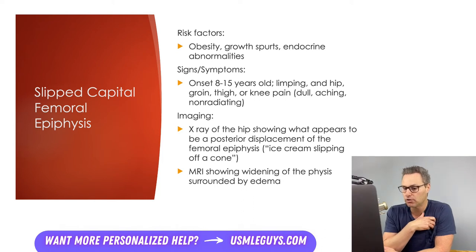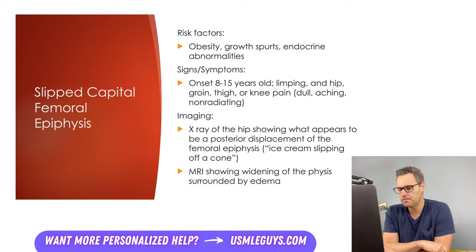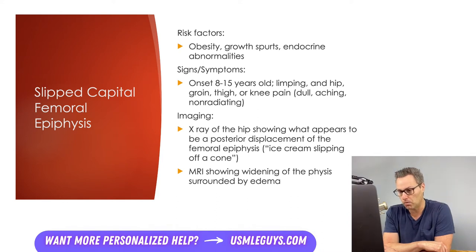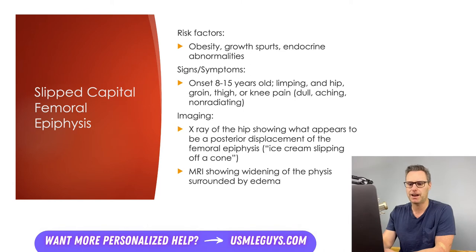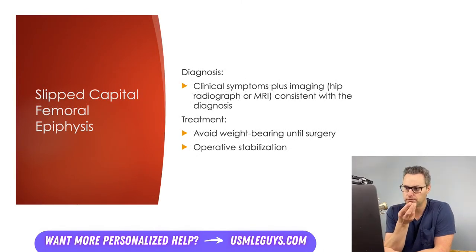The condition can be unilateral or bilateral, and the pain is sometimes characterized as dull or achy, often made worse with walking, and can be chronic or intermittent. Imaging is diagnostic, with an x-ray of the hip showing what appears to be posterior displacement of the femoral epiphysis. This will not be present until later in the disease course, so if we have a high index of suspicion, MRI will show widening of the epiphysis surrounded by edema. Diagnosis is made based on clinical symptoms and imaging with either radiography or MRI.